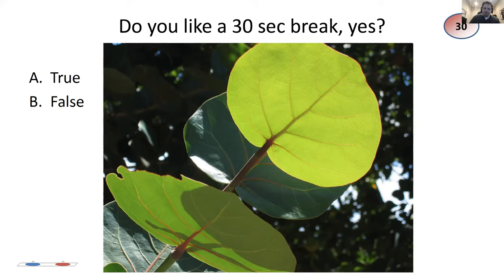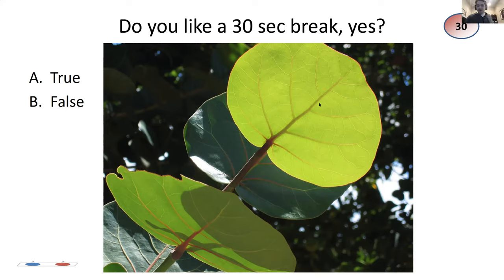Don't underestimate the stomach slides - parietal cells, chief cells, and all those. It won't just be identification; it tends to be higher-order questions. The vignette points to a cell and you have to know what that cell makes and how that incorporates into the biochemistry. Make sure you understand the biochemistry behind all those cells. If you can identify them and pick out the biochemistry, you'll be good.